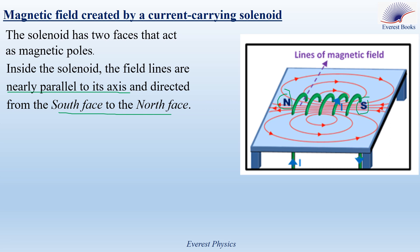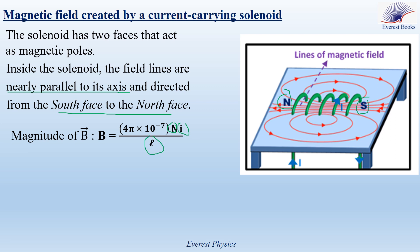These field lines form closed loops, so outside the solenoid they radiate outward from the north pole and converge inward toward the south pole. The magnitude of the magnetic field inside the solenoid is given by B = 4π × 10⁻⁷ × NI/L, where N is the number of loops, I is the current carried by the solenoid, and L is the length of the solenoid. This expression is valid if the solenoid is placed in air.